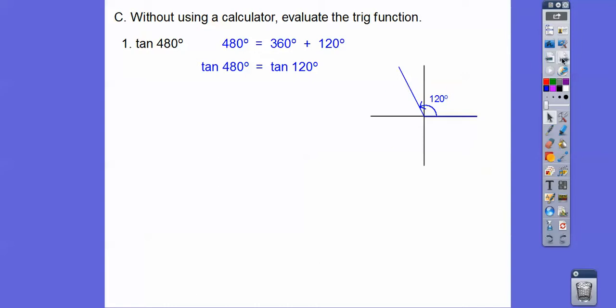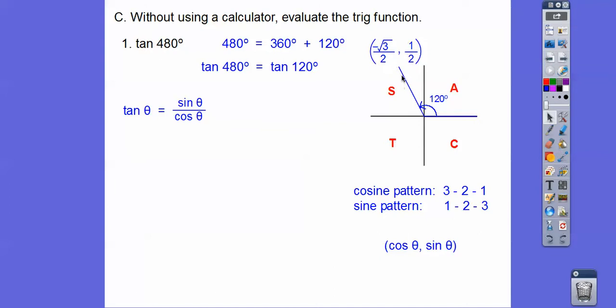Remember, cosine goes 3, 2, 1, and then sine goes 1, 2, 3. So cosine pattern is root 3 over 2, root 2 over 2, root 1 over 2, which is just 1 over 2. Sine is 1 over 2, root 2 over 2, root 3 over 2. They're always written as cosine, comma, sine. So the values up here are going to be negative root 3 over 2, comma, positive 1 half. That's the ordered pairs that represents this 120 degree angle. So now we're going to put this sine over cosine. So sine over cosine gets us that, invert and multiply, and then the 2s cancel. Now we've got to multiply by root 3 over root 3, so we get negative root 3 over 3.